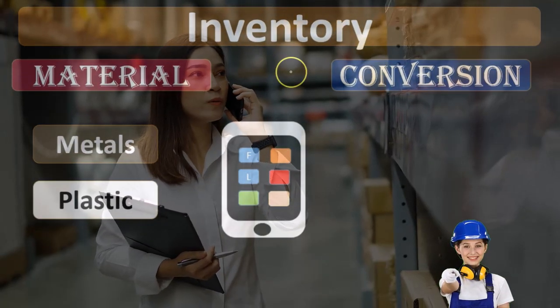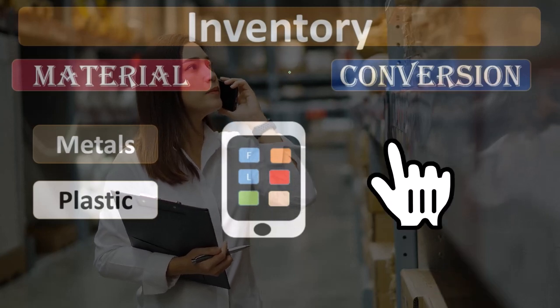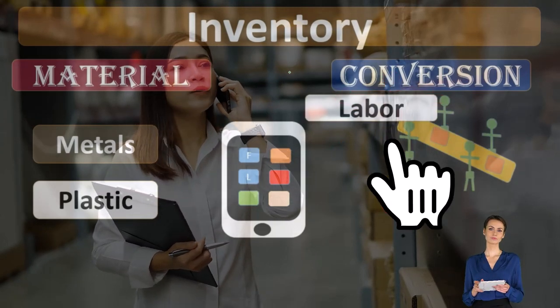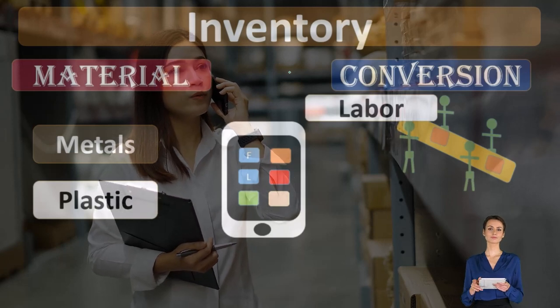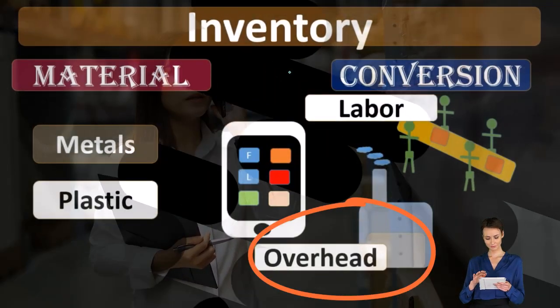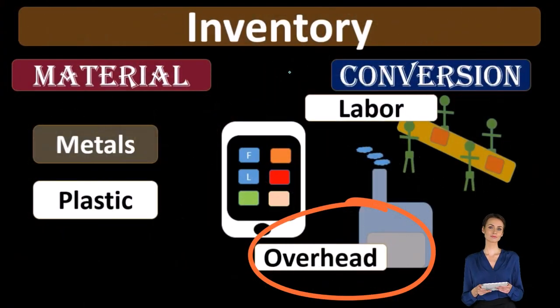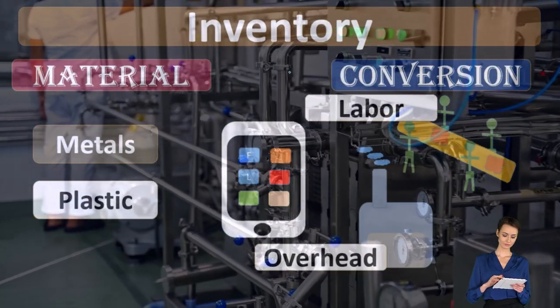Those will be the conversion costs, and those will typically be grouped in terms of the labor that's going to be included in that conversion process as well as the overhead. So anything that's related to the factory, the processing within the factory,